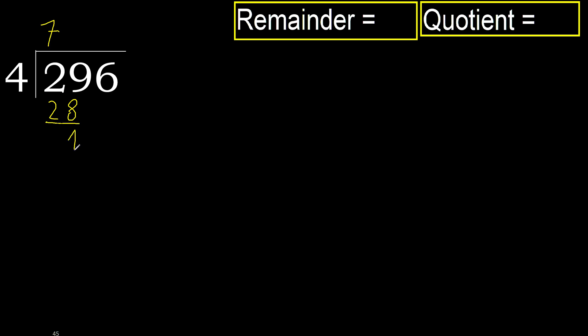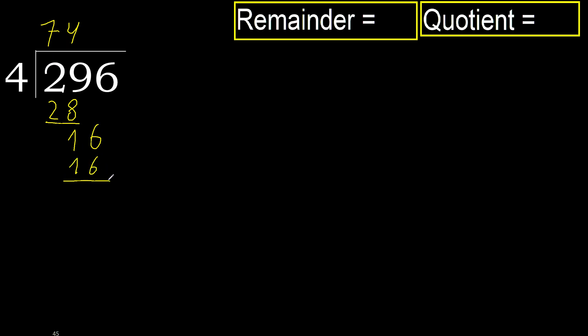OK, subtract. Next bring down 16. 4 multiplied by 5 is greater, so multiply by 4. 4 multiplied by 4 is 16, which is not greater. OK, subtract. Remainder is 0, next.